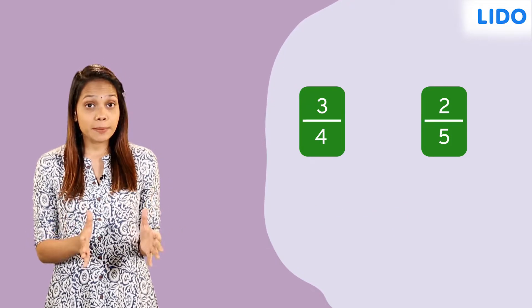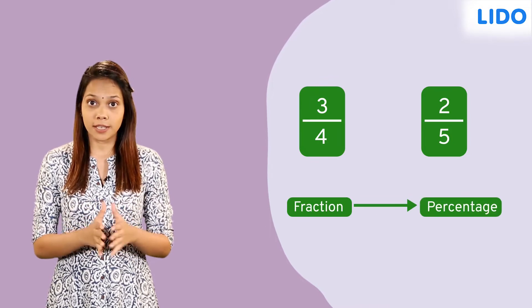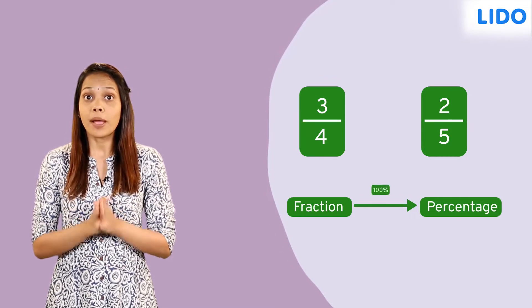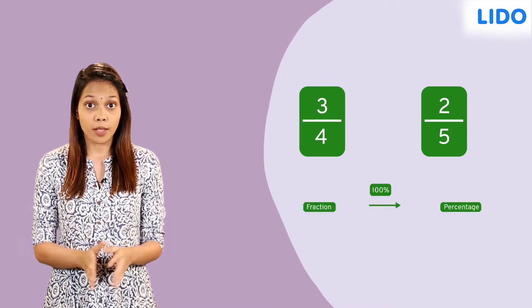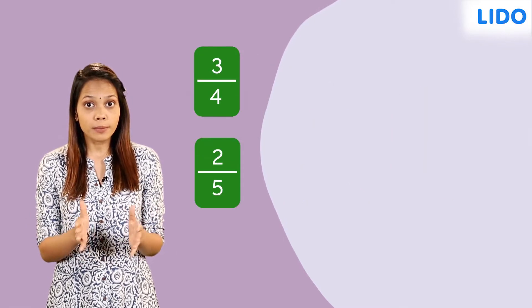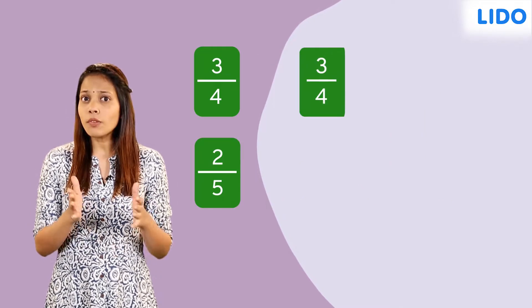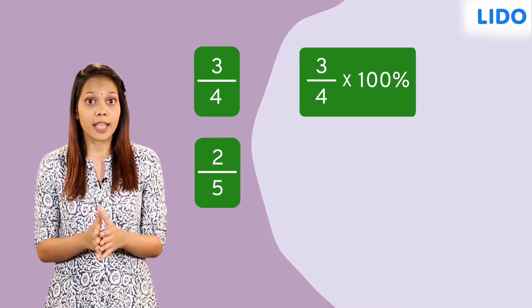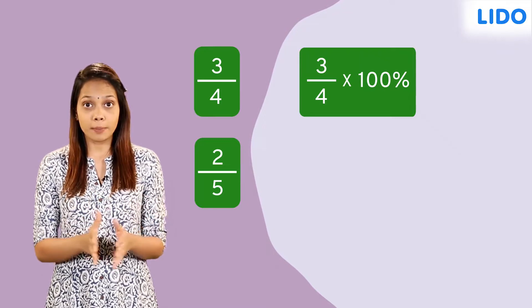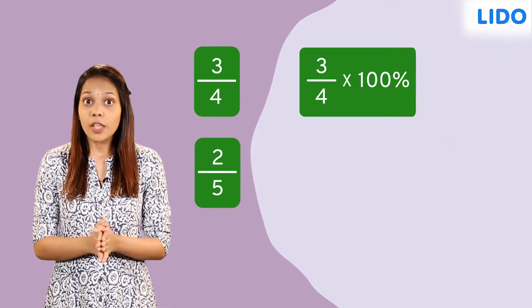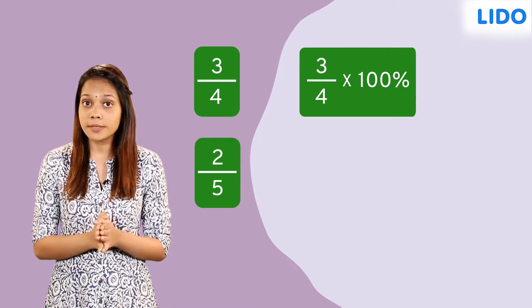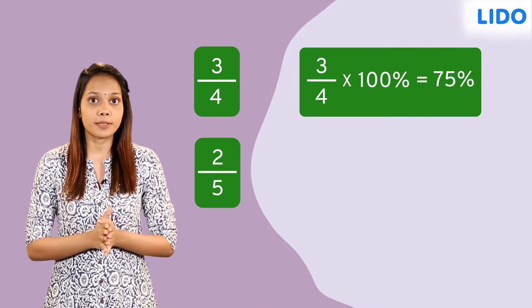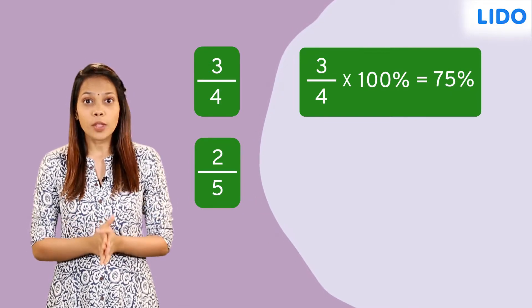To express a fraction as a percentage, we must multiply it by 100%. Going forward, 3 over 4 multiplied by 100% gives us 3 multiplied by 25%, which is equal to 75%.